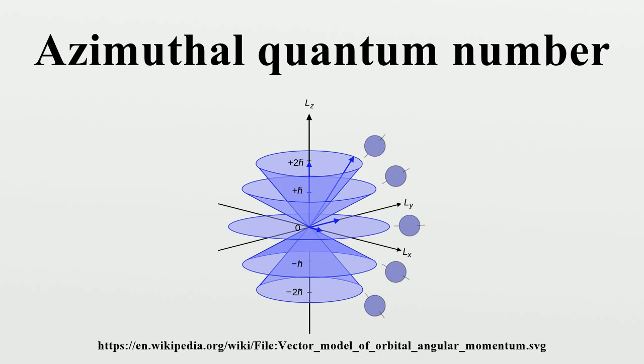The azimuthal quantum number is the second of a set of quantum numbers which describe the unique quantum state of an electron.